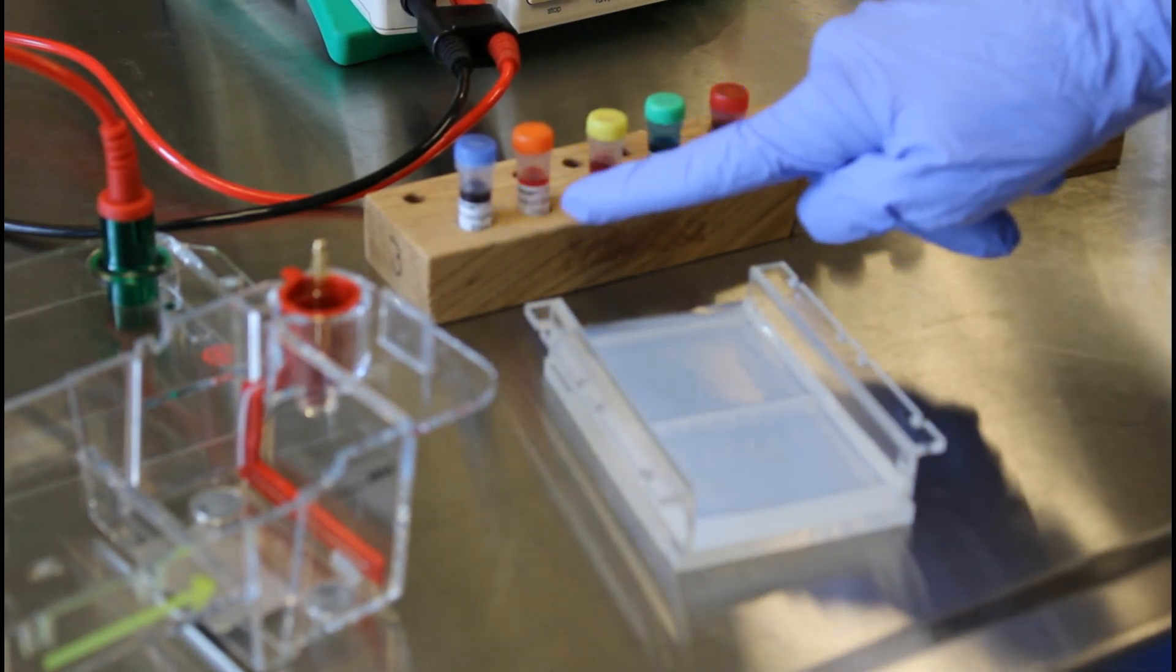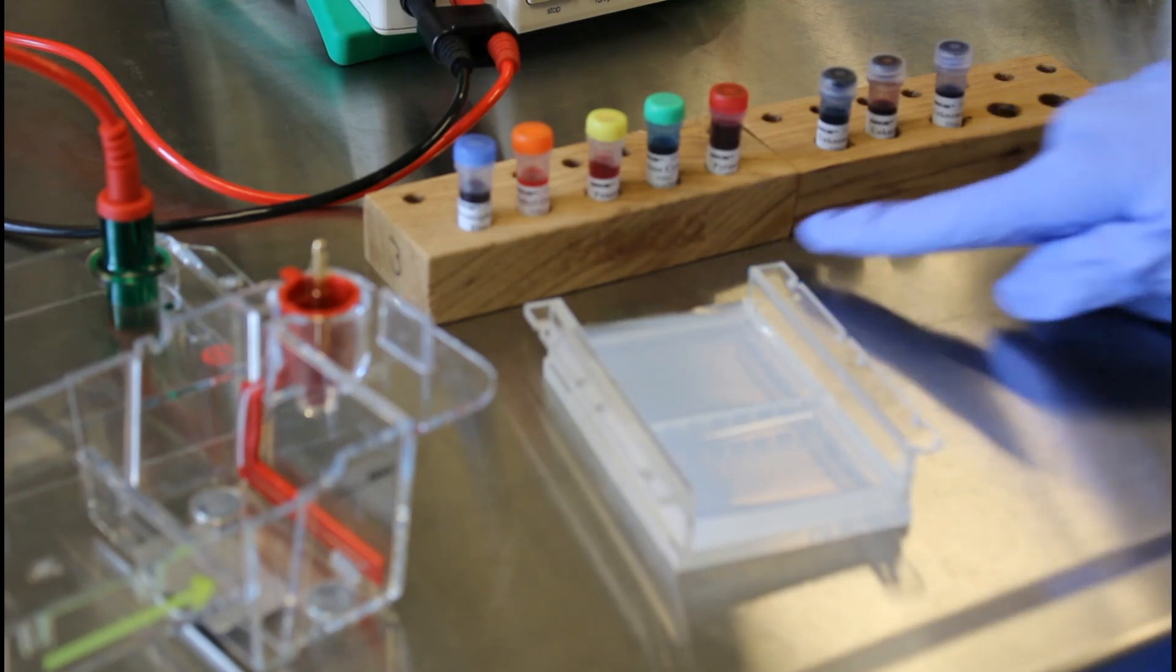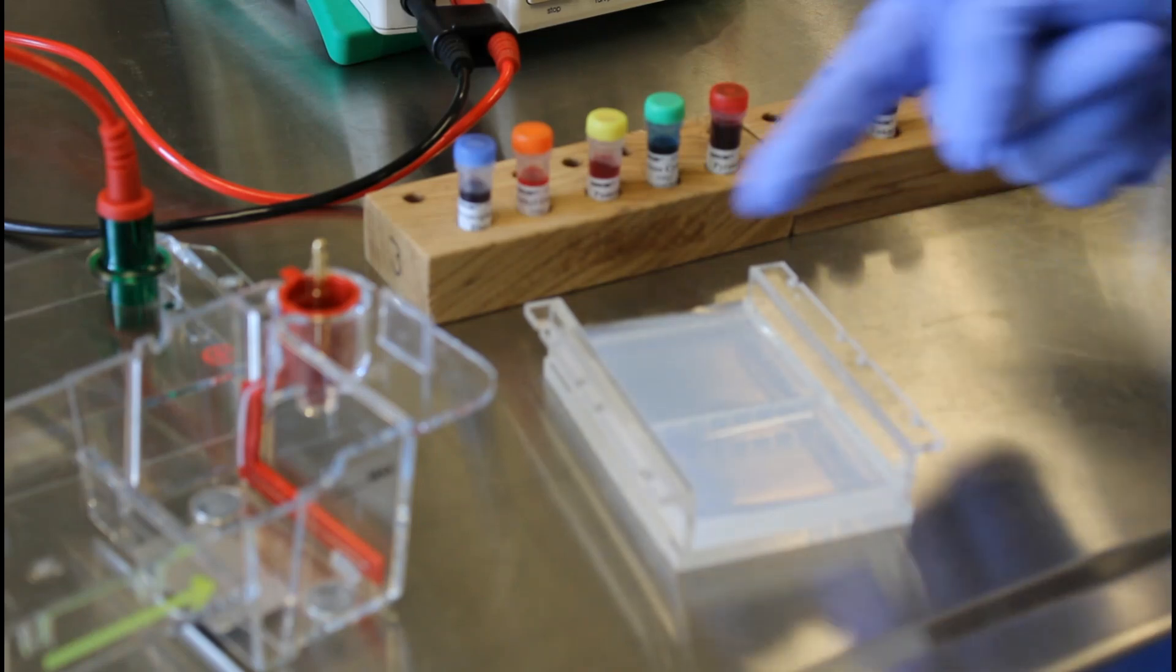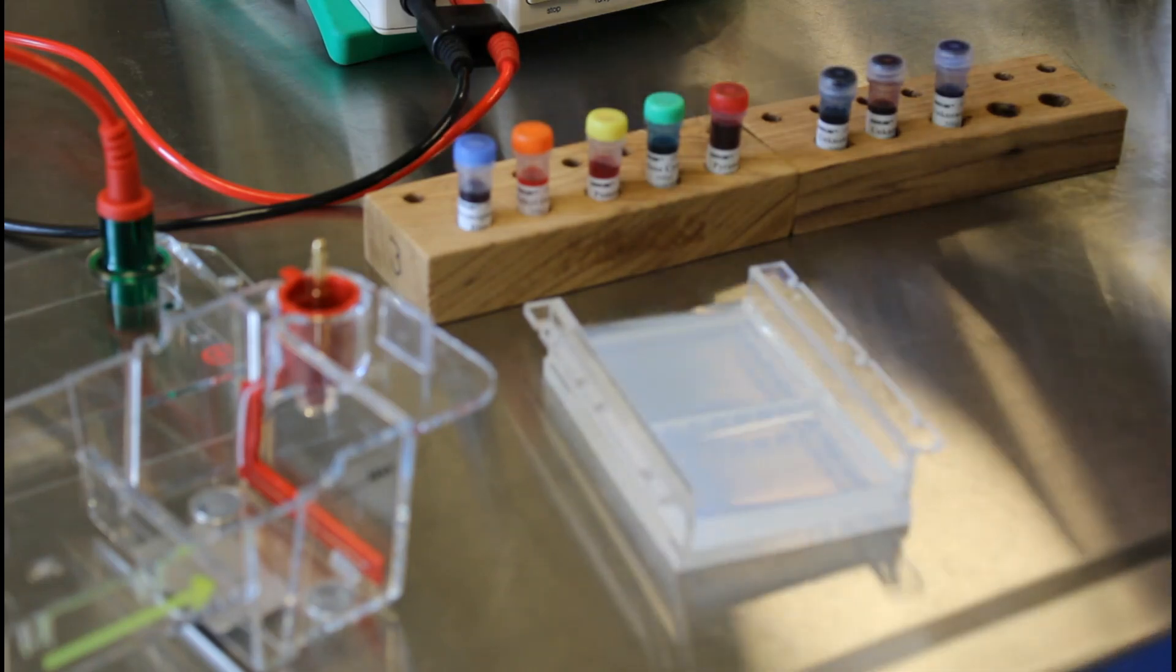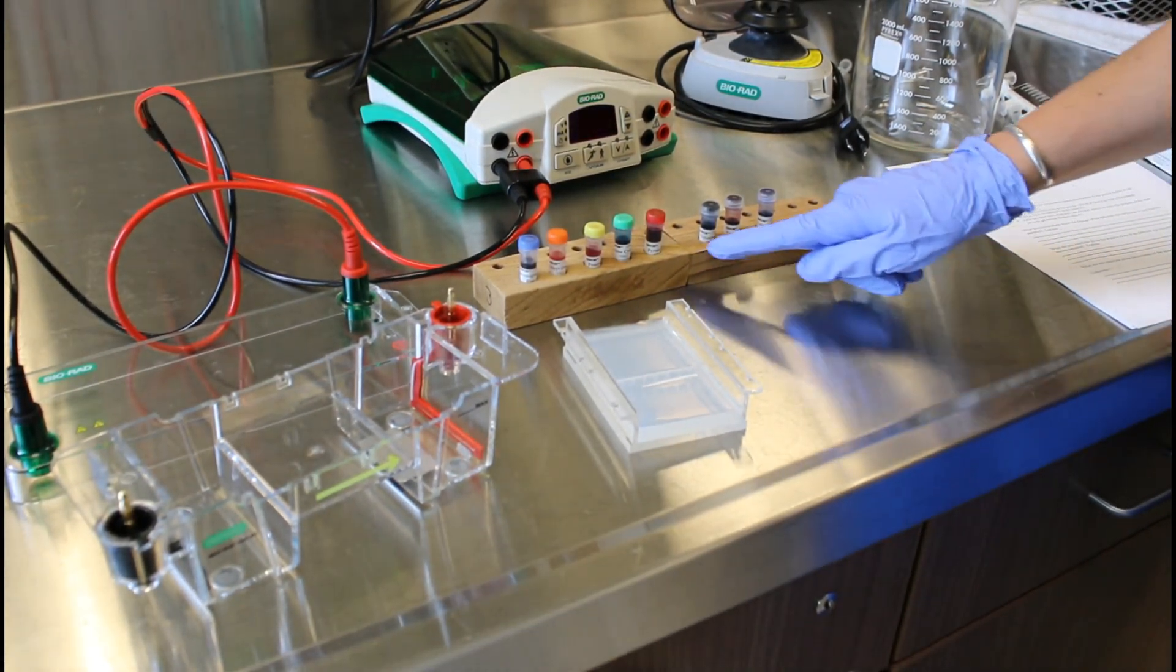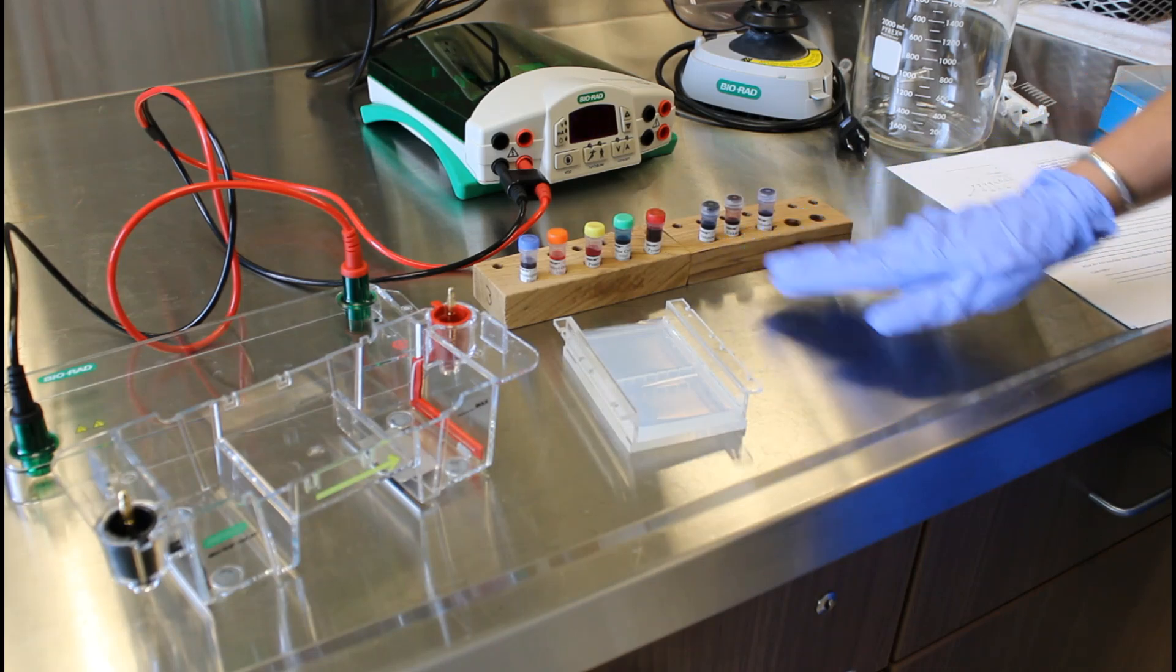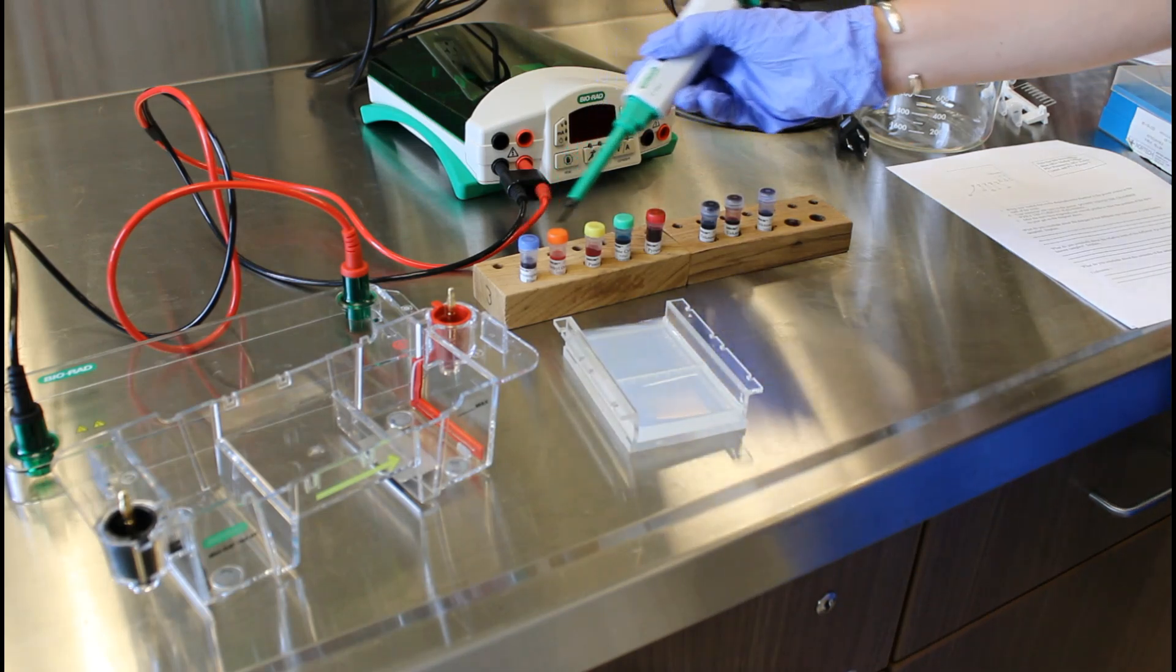There's one, two, three, four, five dyes of known identity and then one, two, three dyes of unknown identity. We're going to load each of them up into a separate well and then we're going to run the gel with electricity. That electricity is going to pull the molecules through the gel and we're going to try to determine the identity of the molecules in these unknown dyes by comparing them to the pattern that we see for the known dyes.